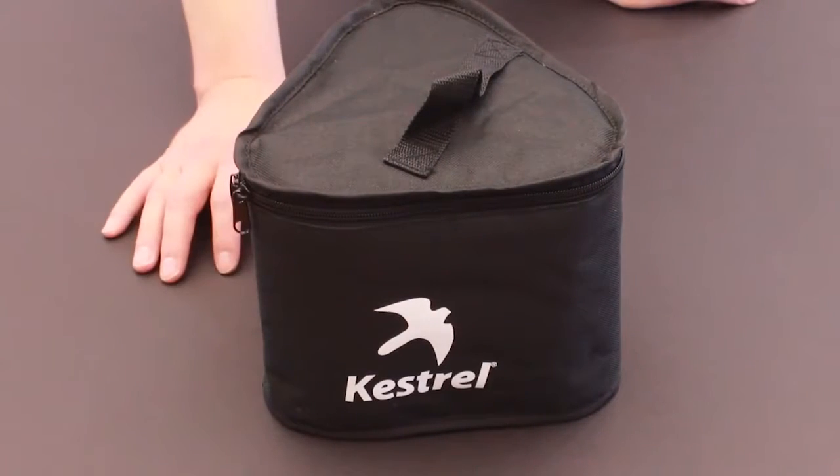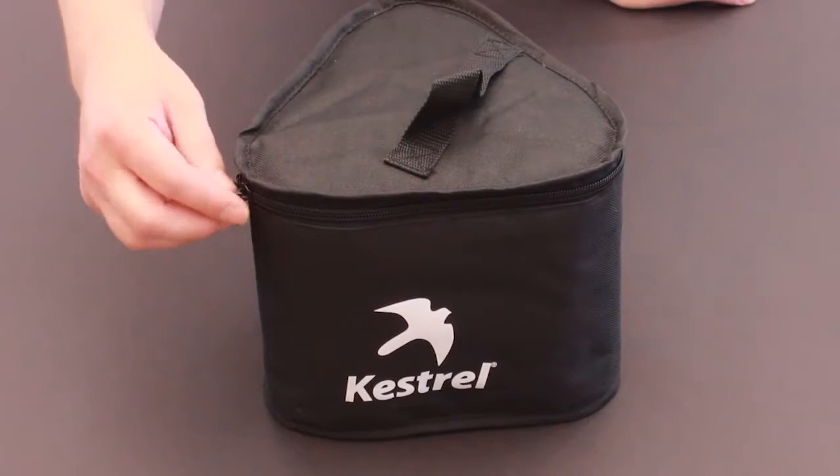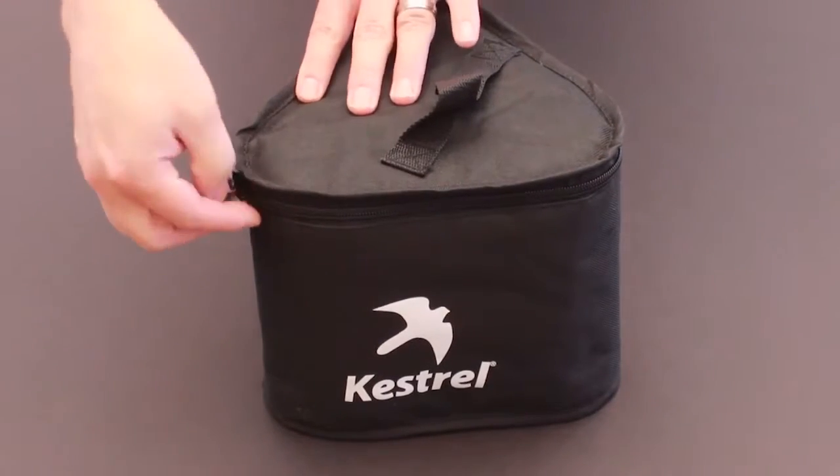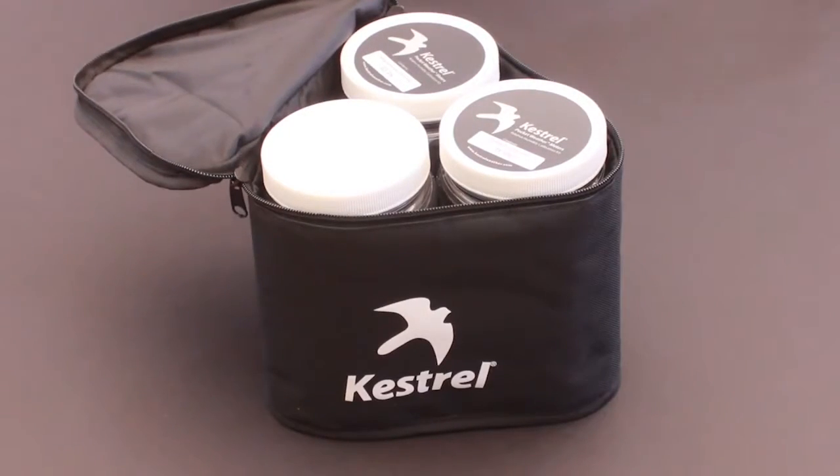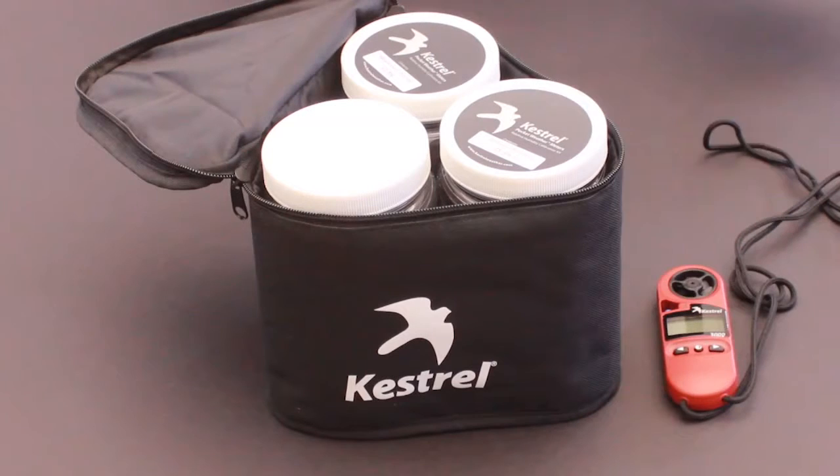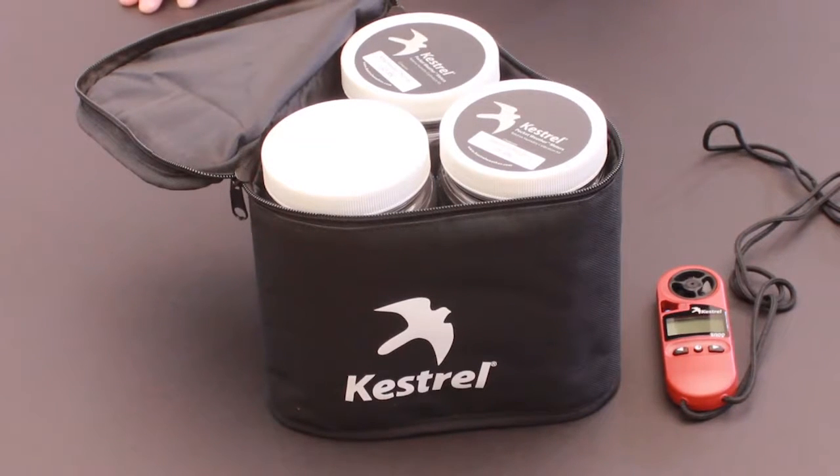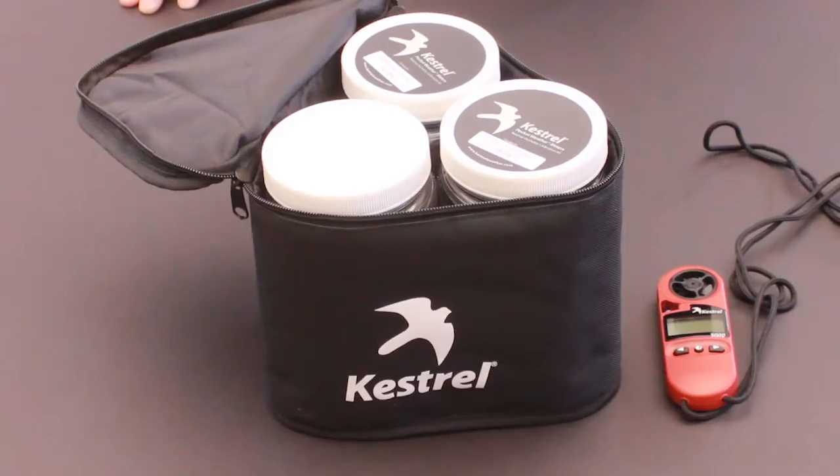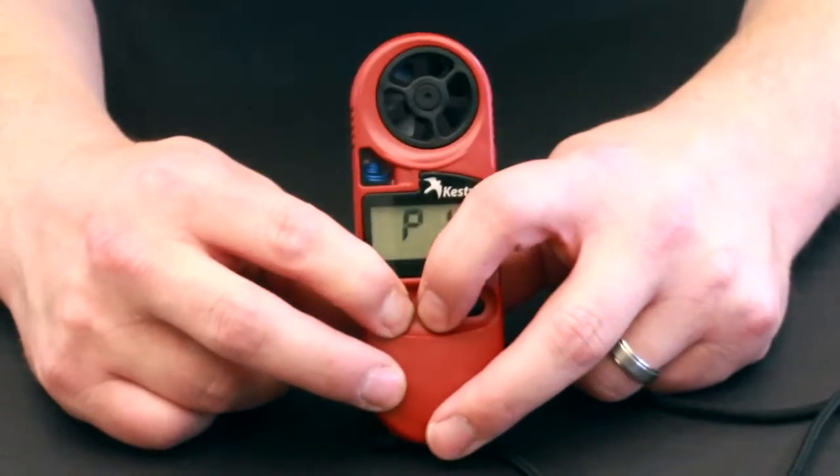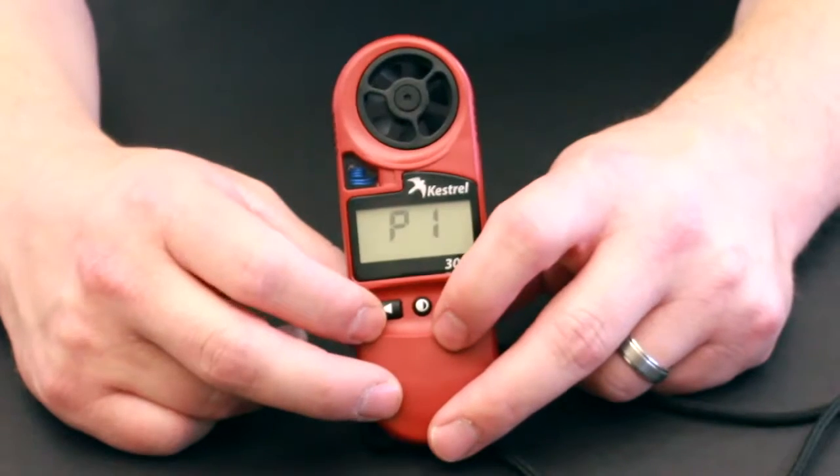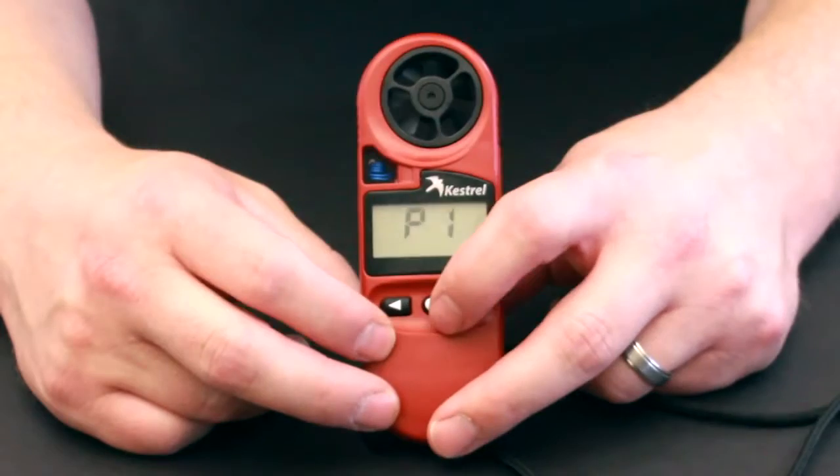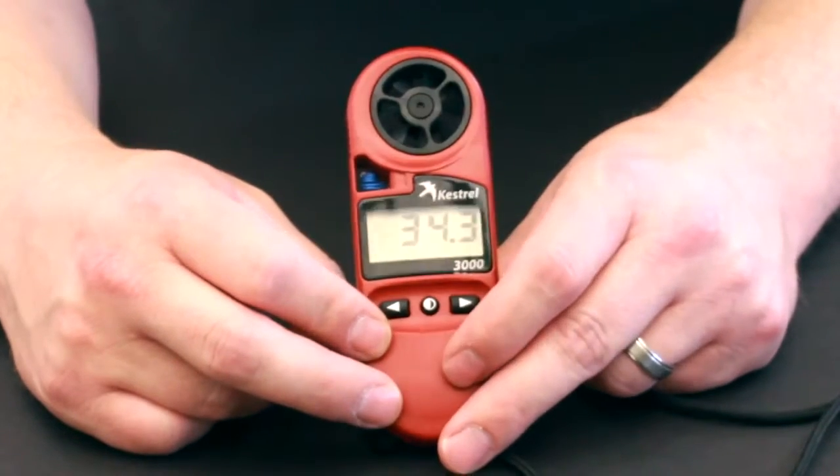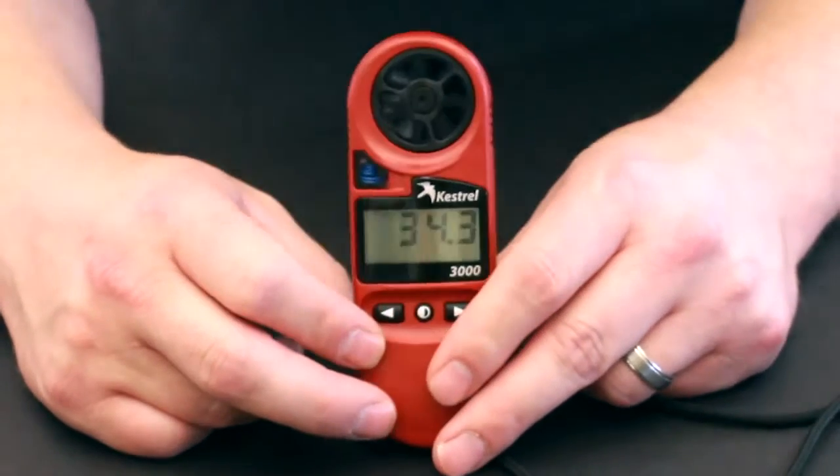After a suitable amount of time has passed, we recommend 10 hours. This will all be at the same temperature and we can start the process to do the calibration. Now open it up and we are going to start with a Kestrel 3000 series. This will work with any of the Kestrel 1, 2, 3s that have humidity in them. You will start by hitting the left button with the center button so that P1 appears.